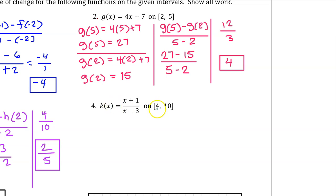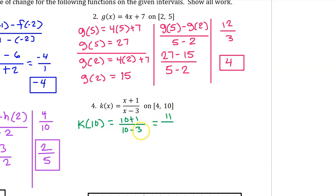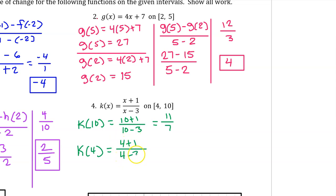To find the average rate of change of k on this interval, we begin by finding k(10): that's (10+1) over (10−3), which is 11 over 7. Next, we need k(4): that's (4+1) over (4−3), which is 5 over 1, which is simply 5.